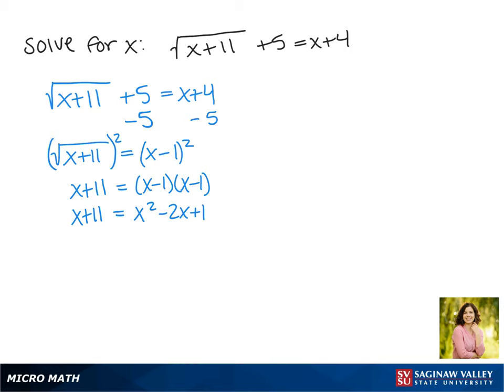Now so that we can factor this and solve for x, we want to set this equal to 0. So we move the x to the other side and then we move the 11 to the other side, so 0 equals x squared minus 3x minus 10.